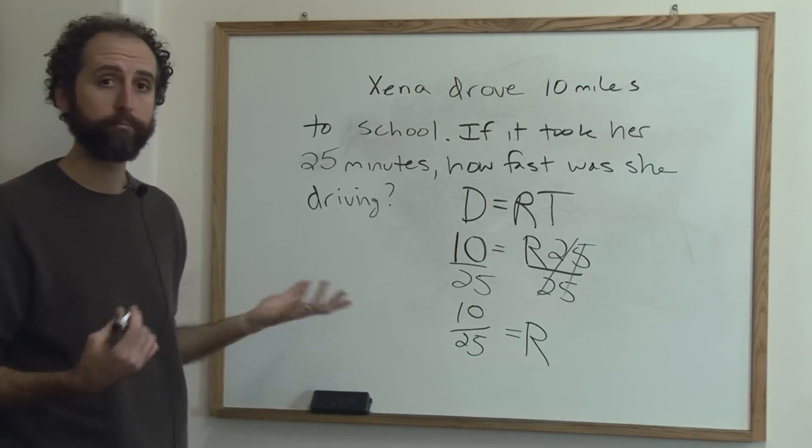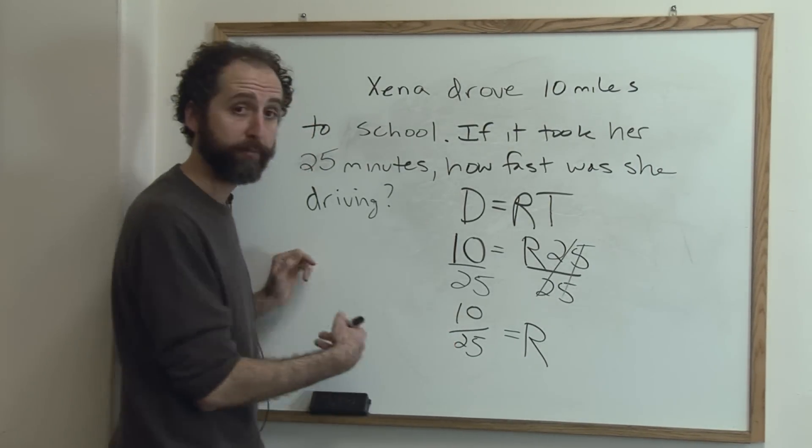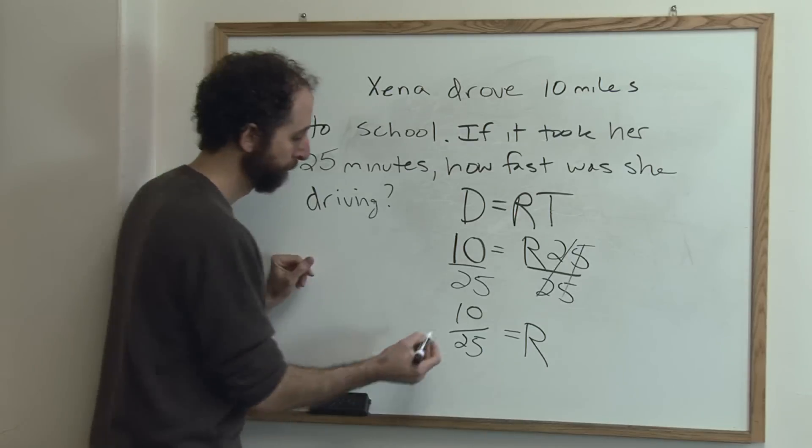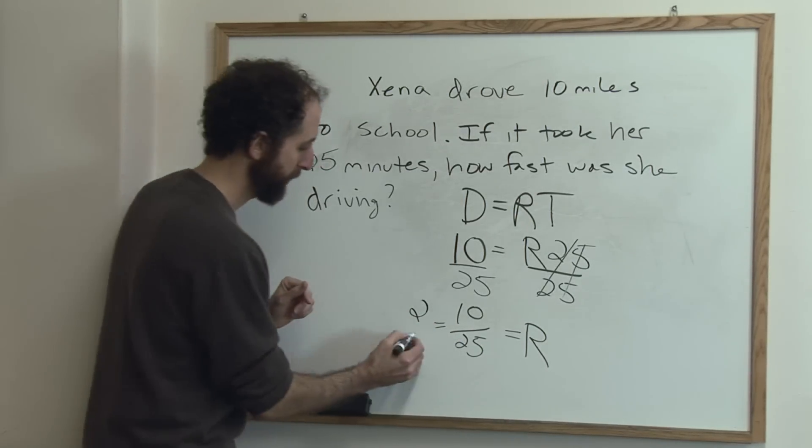As always, if ever you can simplify or reduce a fraction, you should. So 10 over 25. 5 goes into both the top and bottom. 10 divided by 5 is 2. 25 divided by 5 is 5.